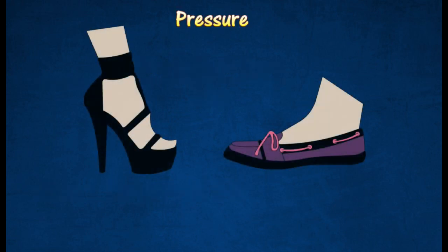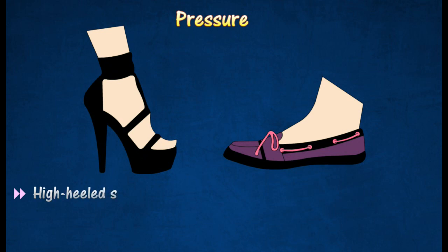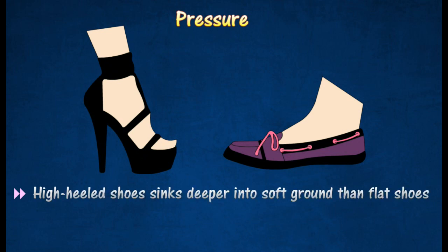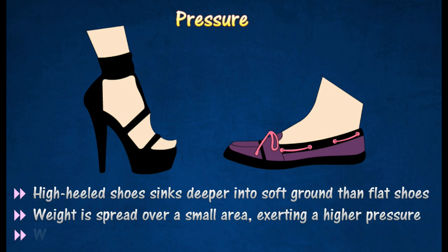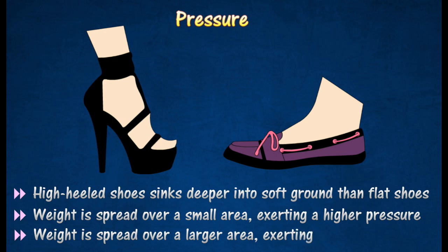For better understanding, a woman wearing high-heeled shoes sinks deeper into soft ground than a female student wearing flat school shoes. Both the woman and the student have the same body weight acting downwards on the ground. The woman's weight is spread over a smaller area of her shoes, thus exerting a higher pressure on the ground. The student's weight is spread over a larger area of her shoes, thus exerting a lower pressure on the ground.